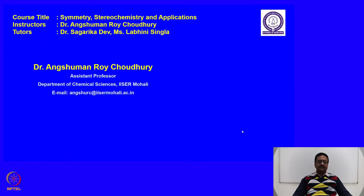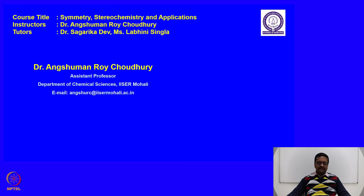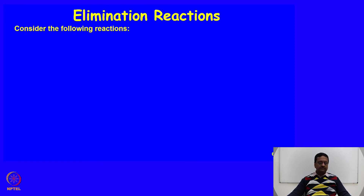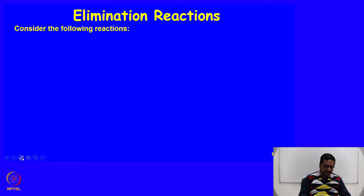Welcome to the course entitled Symmetry, Stereochemistry, and Applications. In the last few lectures we have discussed about substitution reactions and stereochemical aspects of SN1 and SN2 reactions. Today we will start the next part of this course where we will try to understand the substitution chemistry of elimination reactions. Let us consider a few reactions which we have already seen in our previous classes.